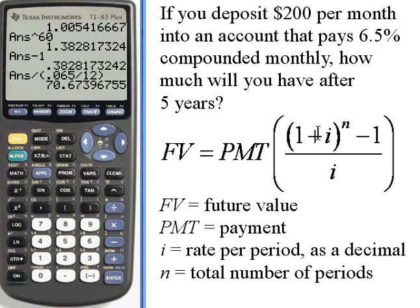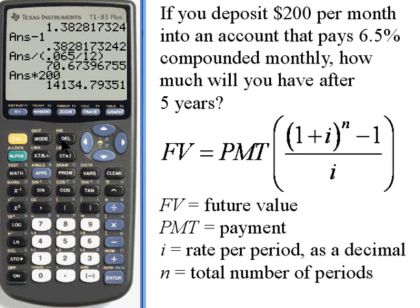So that amount times the payment, which was going to be $200 per month, should give us the future value. So I'll multiply that amount, that's 70.67, times 200, and I get $14,134.79.